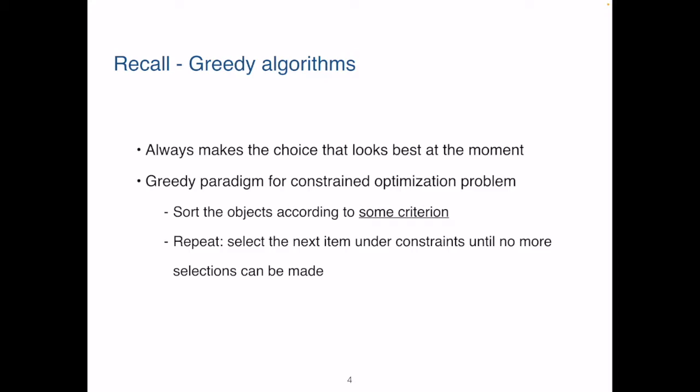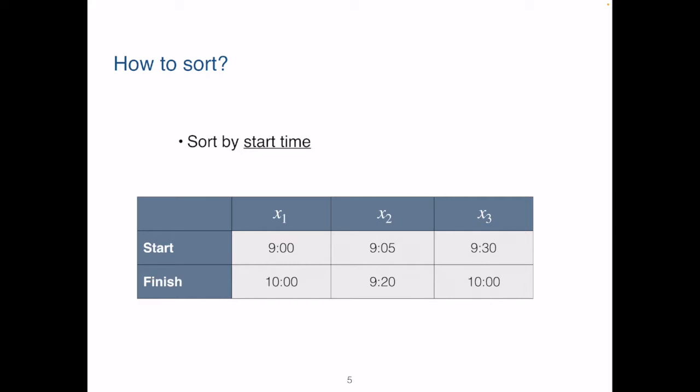Please recall the fundamental principle of greedy algorithms. A greedy algorithm always starts by sorting the objects, but it can be a challenge to find the right sorting criterion. Back to our activity selection problem. How should we sort the activities? We can experiment with different criteria and see how they work. First, we may sort the activities by starting time. Then we repeatedly choose the next activity if it does not overlap with the ones already chosen. Then for this example here, greedy algorithm would pick X1, and then that'll be the only activity we can choose. We know this is not the optimal solution since we can choose X2 and X3. Then we'll have two activities instead of one. So the algorithm will fail on this example.